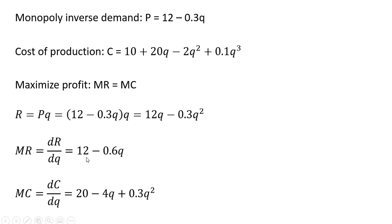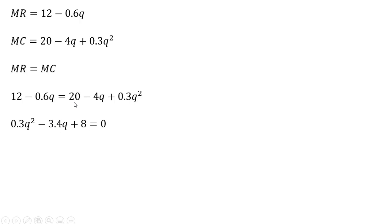Now we're going to set both of these equations equal to one another and solve for q. Setting marginal revenue and marginal cost equal. Now simplifying, we subtract 12 from both sides, so 20 minus 12 gives us 8. Then we add 0.6q to both sides, so minus 4q plus 0.6q gives us minus 3.4q.